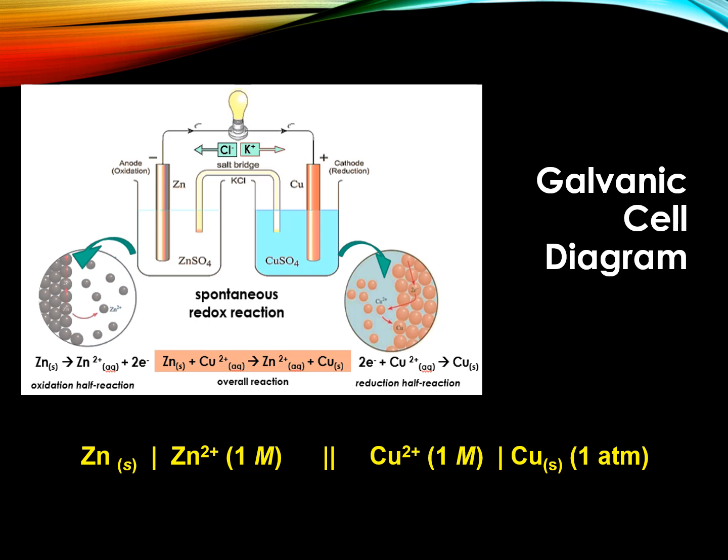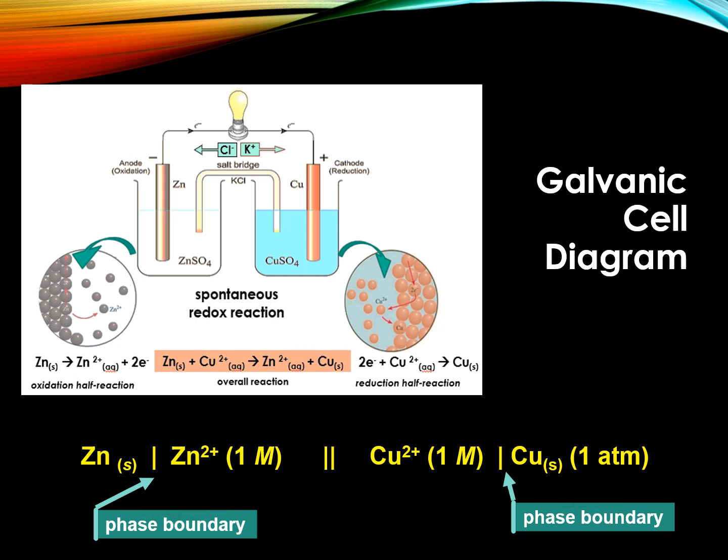The single vertical line represents a phase boundary. Thus, between the solid zinc electrode and the zinc 2-positive ions from the zinc sulfate solution, we draw a line to show the phase boundary. This is similarly done between the copper ions from the copper sulfate solution and solid copper electrode. Remember that there are three phases: solid, liquid, and gas.